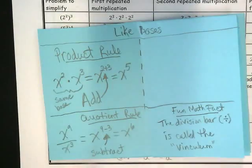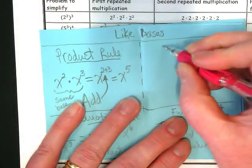We have the product rule. We have the quotient rule. Over here, we're going to put the power rule.